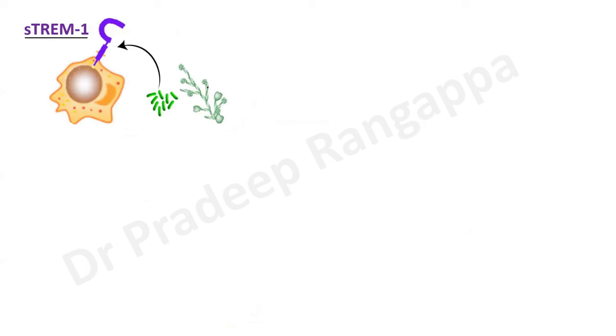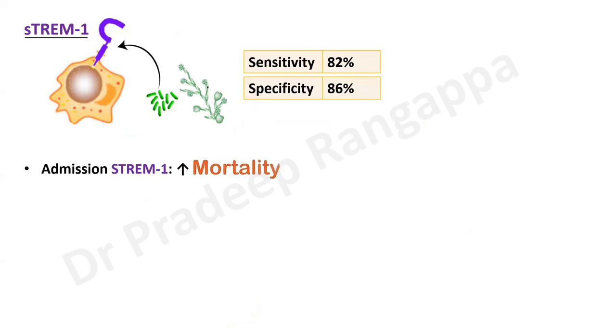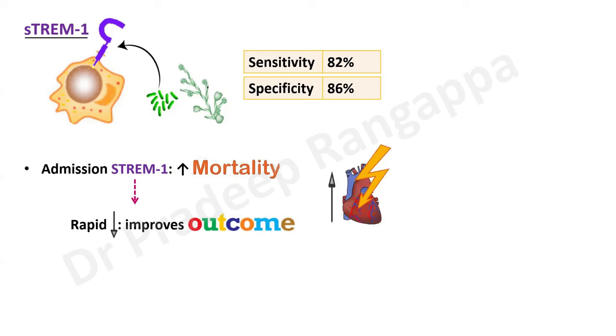STREM-1 — soluble triggering receptor expressed on myeloid cells — gets expressed when there is exposure to bacteria or fungi. Sensitivity is 82%, specificity is 86%. Higher admission STREM-1 correlates with increased mortality, and rapid decline correlates with improved outcomes — similar in concept to lactate trends. However, it can increase in acute MI as well. The type of assay used to identify STREM-1 has a bearing on accuracy and interpretation.